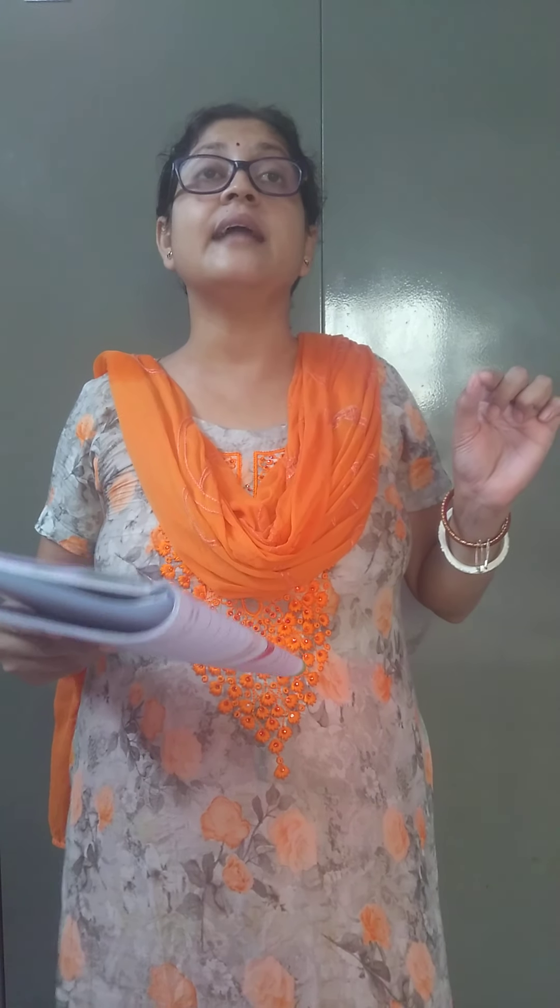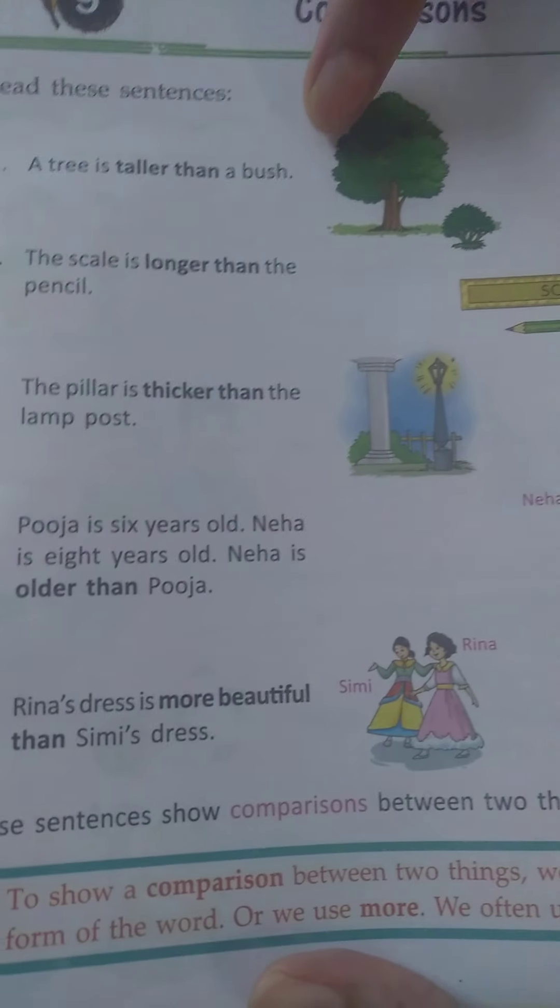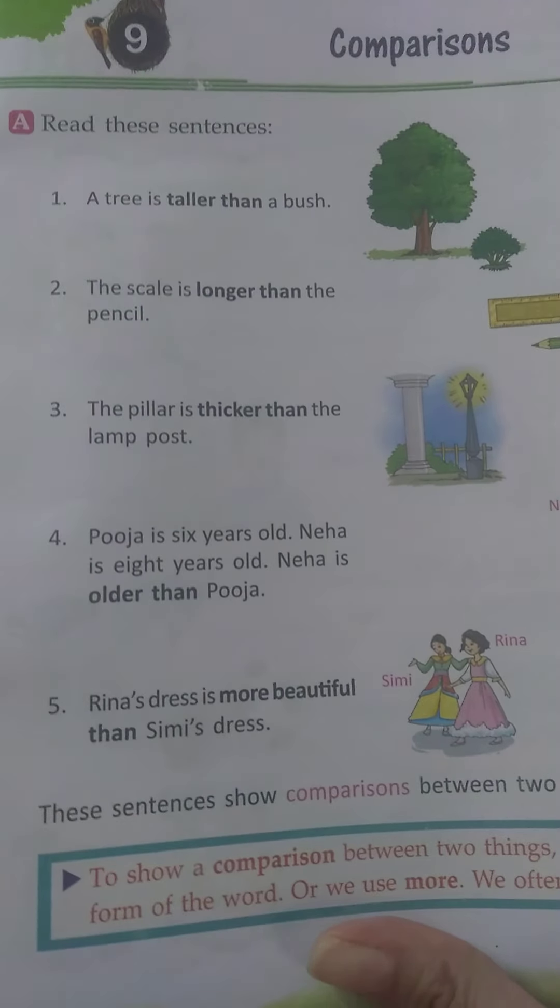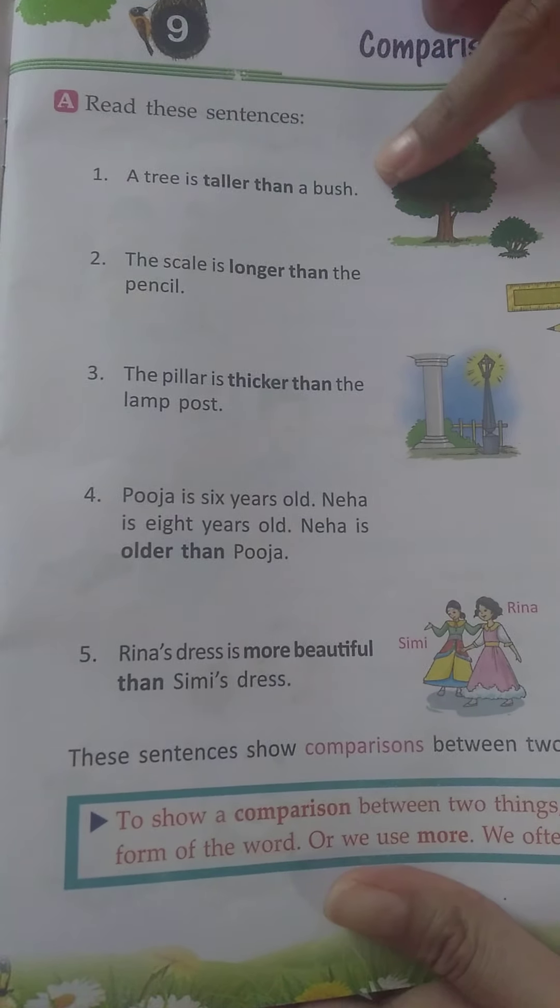So two or more than two persons. For example, if I am telling in the class that Nihan is a short boy, and after that I can tell that Armani is taller than Nihan. So tall, taller; short, shorter; long, longer. Here you can see the picture — a tree is taller than a bush. Bush is only a small part, so obviously tree is taller.